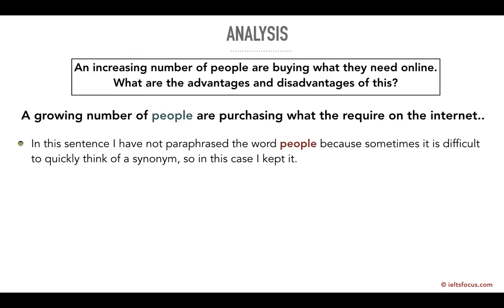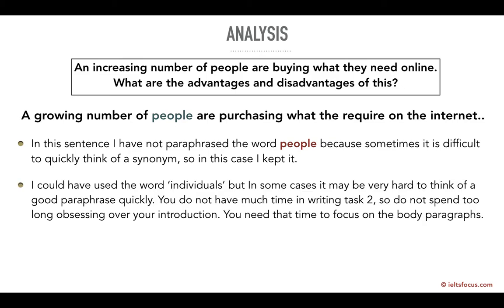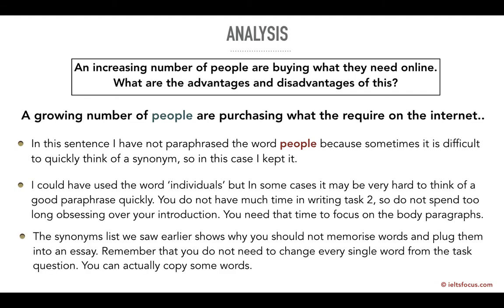Sometimes it can be difficult to quickly think of a good synonym, so you can just keep the word. You could have used 'individuals,' but it may be very hard to think of a good paraphrase quickly. In writing task two you only have 40 minutes, so you shouldn't spend too much time obsessing over the introduction — you need that time to focus on the body paragraphs. You don't have to change every single word from the task question; you can copy some words. A lot of people lose points because they think they must use a synonym for every single word.